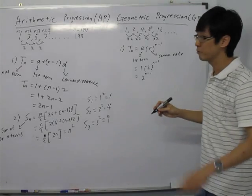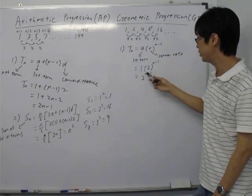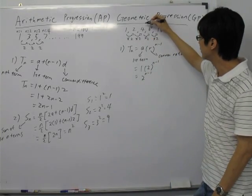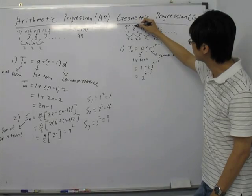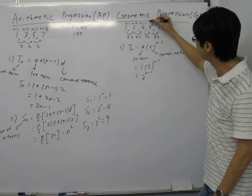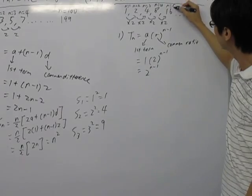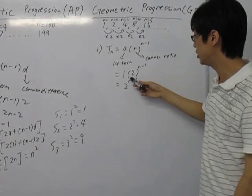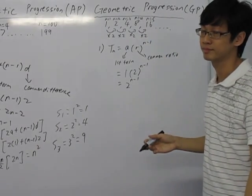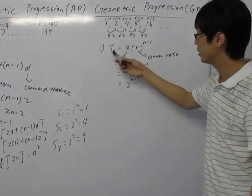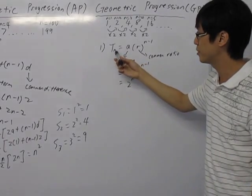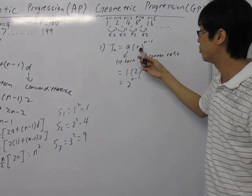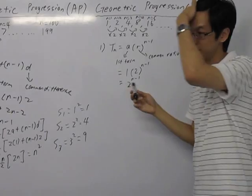So let's say I want to find the third term — I sub N equals to 3. So (3 minus 1) gives 2, and 2 squared gives 4, which is the third term. Please remember: the N-th term equals A times the common ratio to the power of (N minus 1).